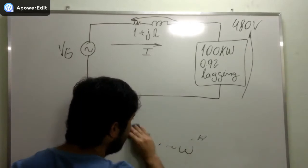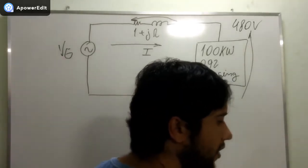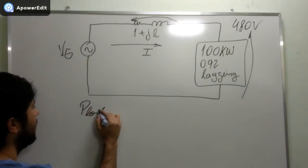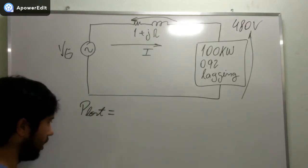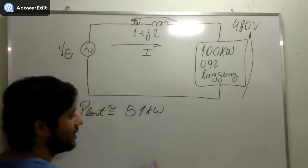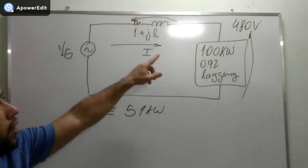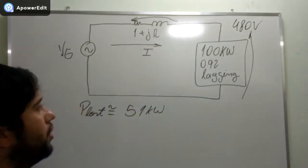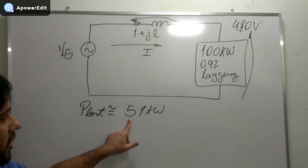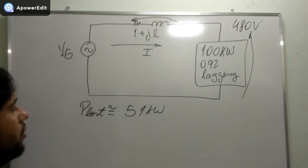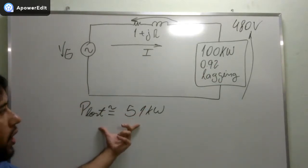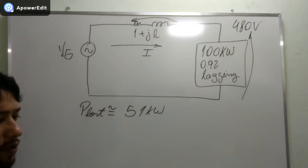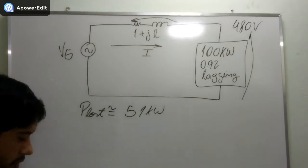The power lost in transmission with this configuration — without transformers — is approximately 51 kilowatts. That is roughly half the load power, meaning we are losing a huge amount of power in the transmission line that could be used to supply other loads. Save this value; we are going to use it for comparison.